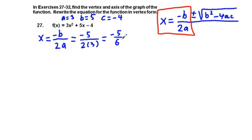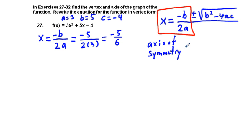Negative 5 sixths is the value of our axis of symmetry. The axis of symmetry equation is x equals negative 5 sixths. And this is going to help us find our equation in vertex form.